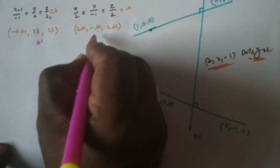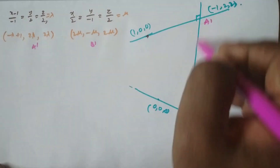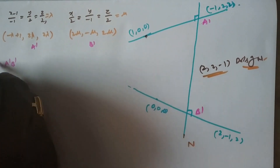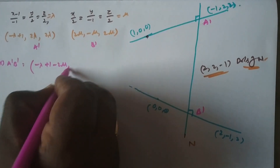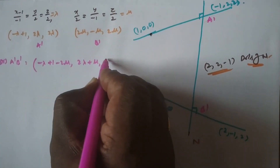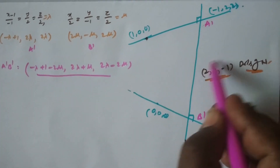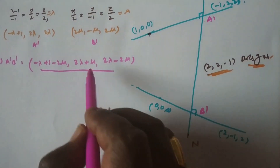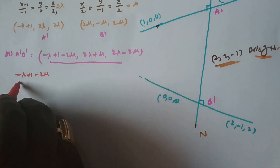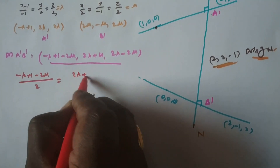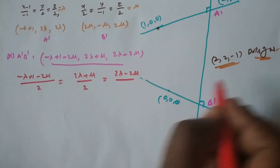Call these A dash and B dash. The direction ratios of A dash B dash are: (-λ+1-2μ), (2λ-μ), (2λ-2μ). Since A dash B dash is parallel to the normal with direction ratios 2, 2, -1, these must be proportional. So we have: (-λ+1-2μ)/2 = (2λ+μ)/2 = (2λ-2μ)/(-1).